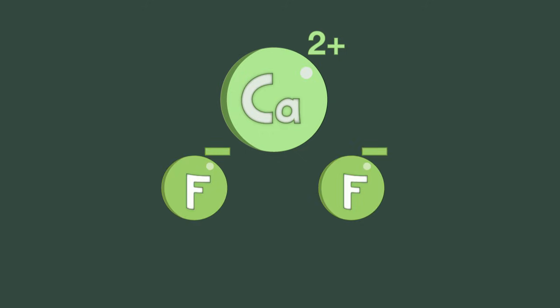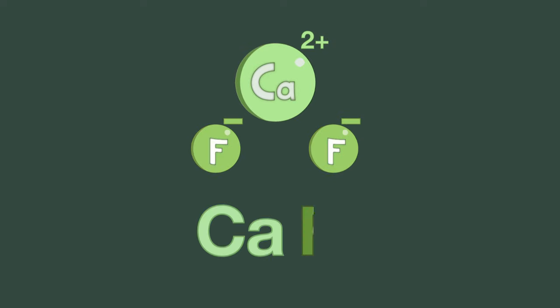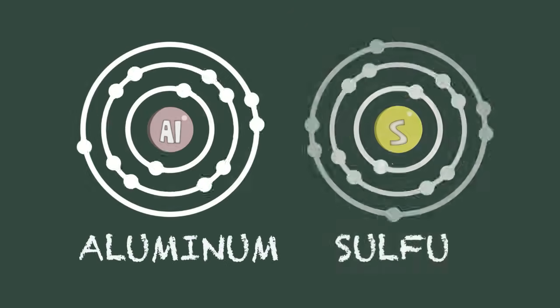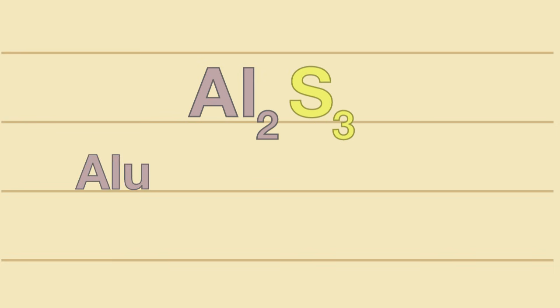This concept is stitched together when writing its formula CaF2. We will do one more example together, this time with aluminum and sulfur. The formula is Al2S3 and the name is aluminum sulfide.